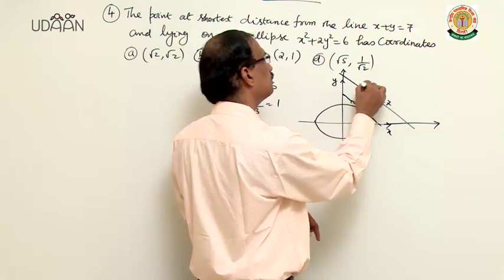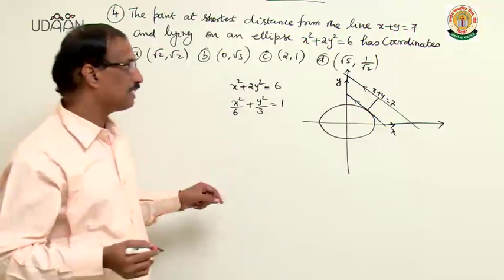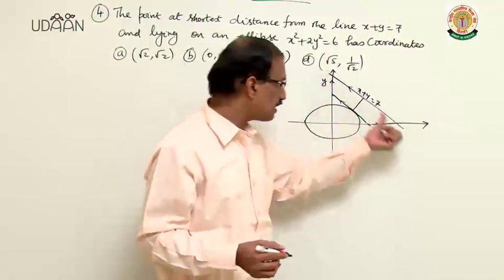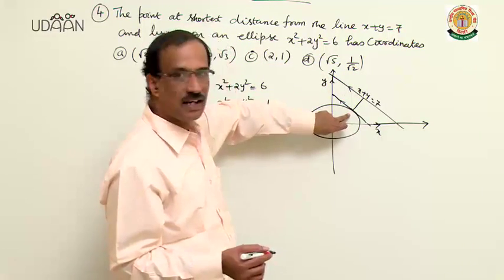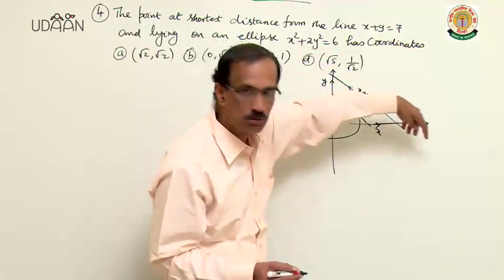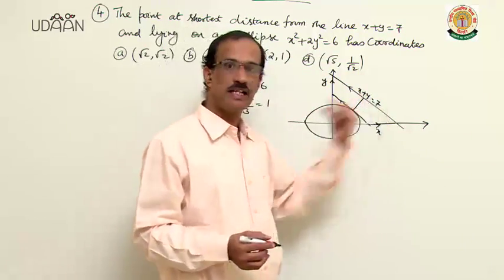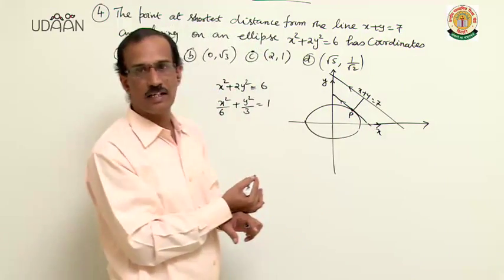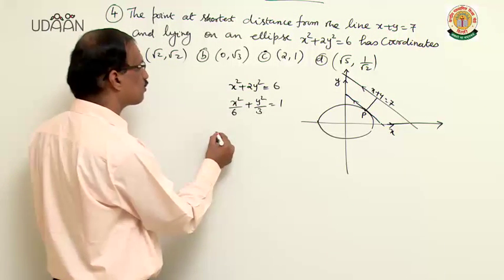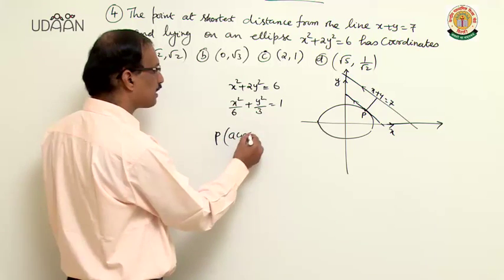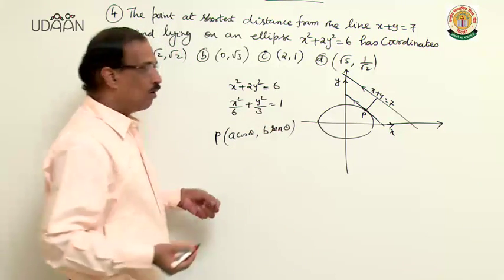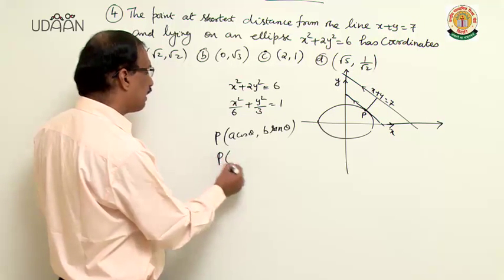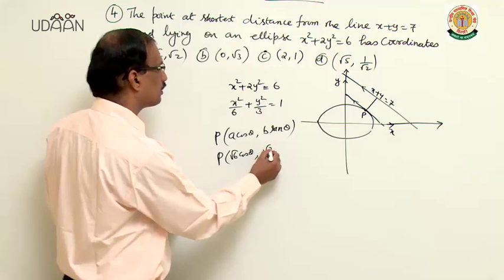Let P = (√6 cosθ, √3 sinθ) be the required point on the ellipse x²/6 + y²/3 = 1, where A = √6 and B = √3. The equation of the tangent at P is: (√6 x cosθ)/6 + (√3 y sinθ)/3 = 1, which simplifies to x cosθ/√6 + y sinθ/√3 = 1.